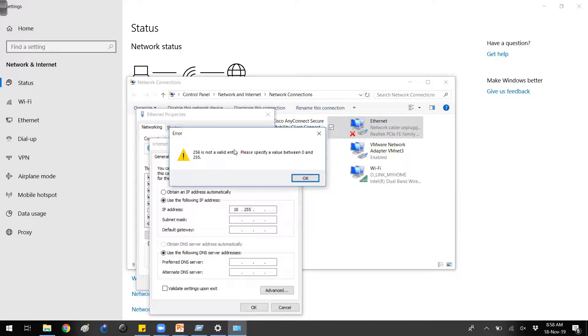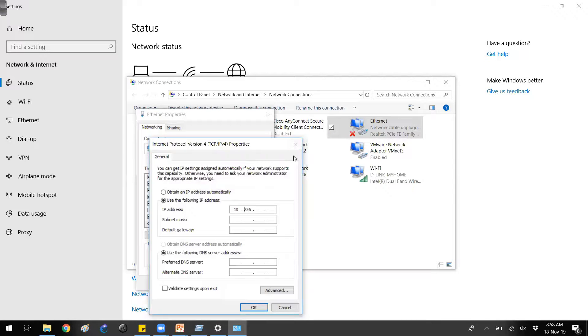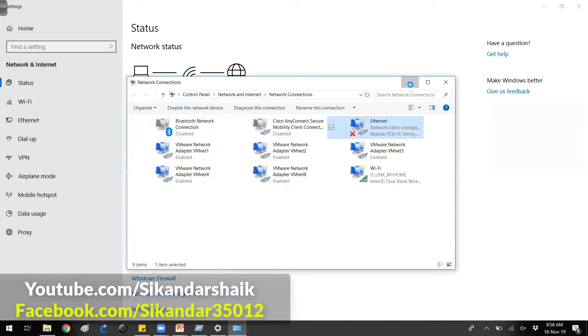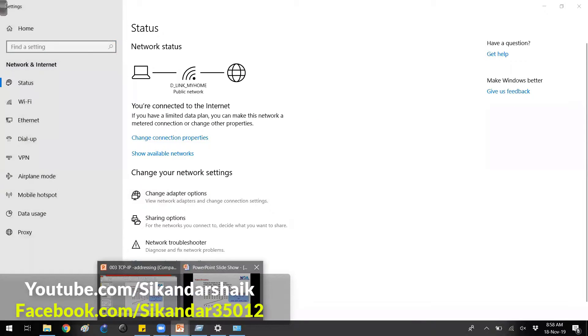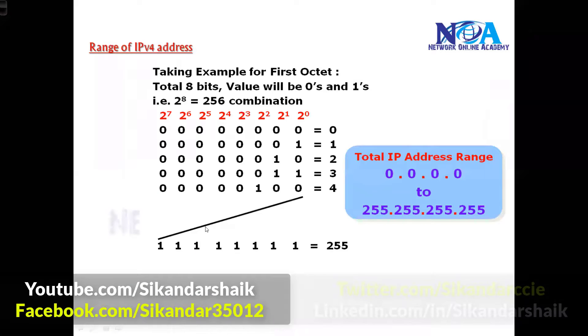So the range of address is always 255. You cannot go beyond that—that is the default range of IP addresses. All zeros is the first address, and the last address will be all 255.